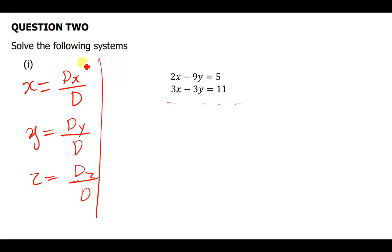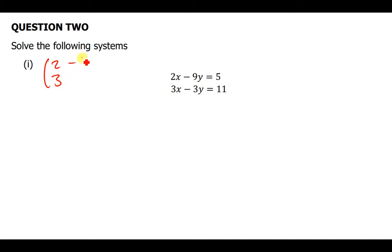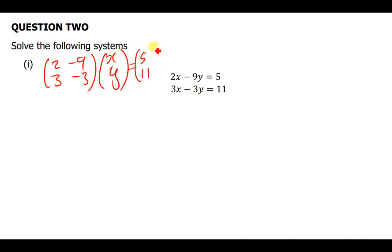These are the equations we're going to use. Let us first start by finding d, then we move on to dx and dy. We write the equations in matrix format: the coefficient matrix is [2, 3; negative 9, negative 3], with variables x and y, and the right-hand side equal to 5 and 11.